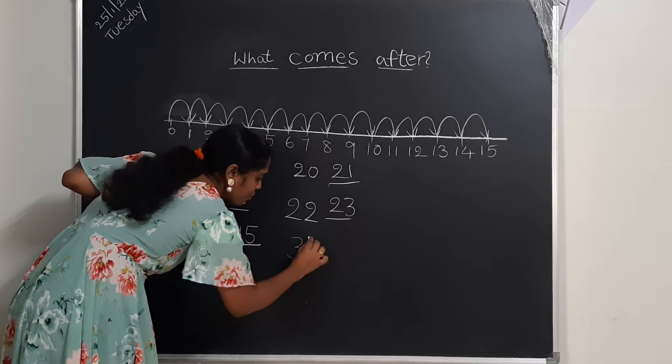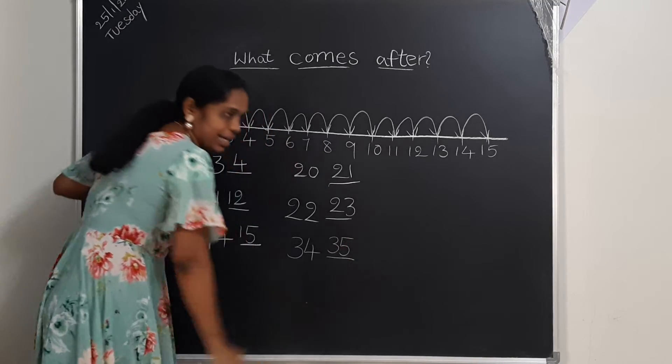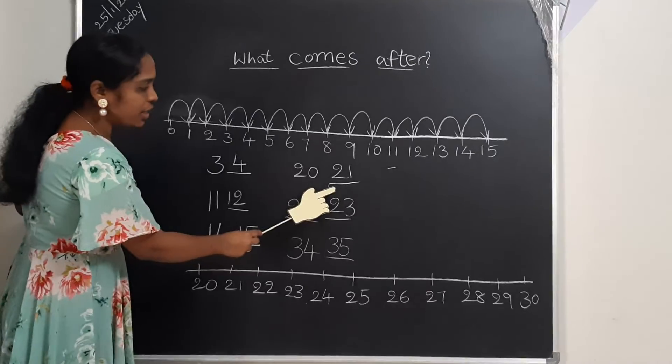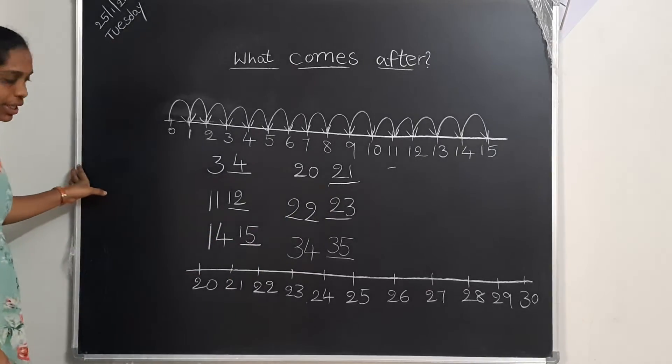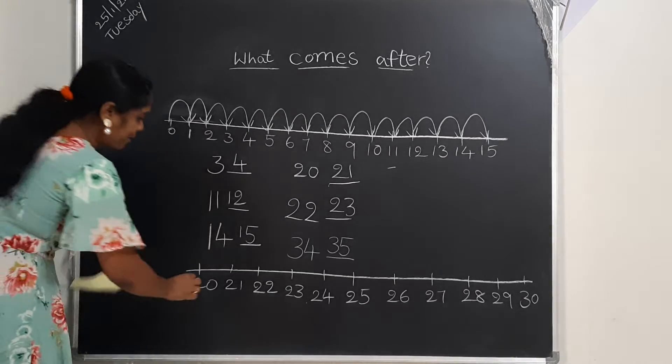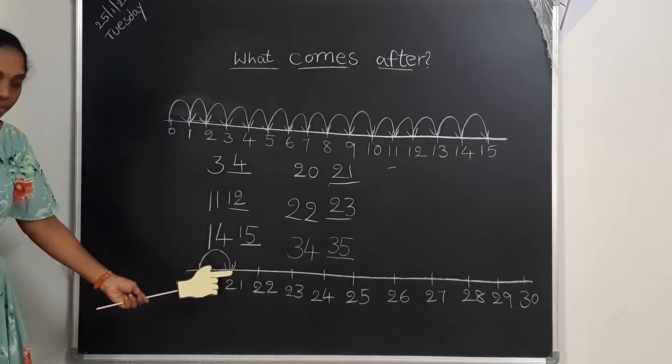22 after... 23. Next. 34 after... 35. Here, 20 after... 21. If you have any doubt, start the line like this. Then you have the idea of after numbers.